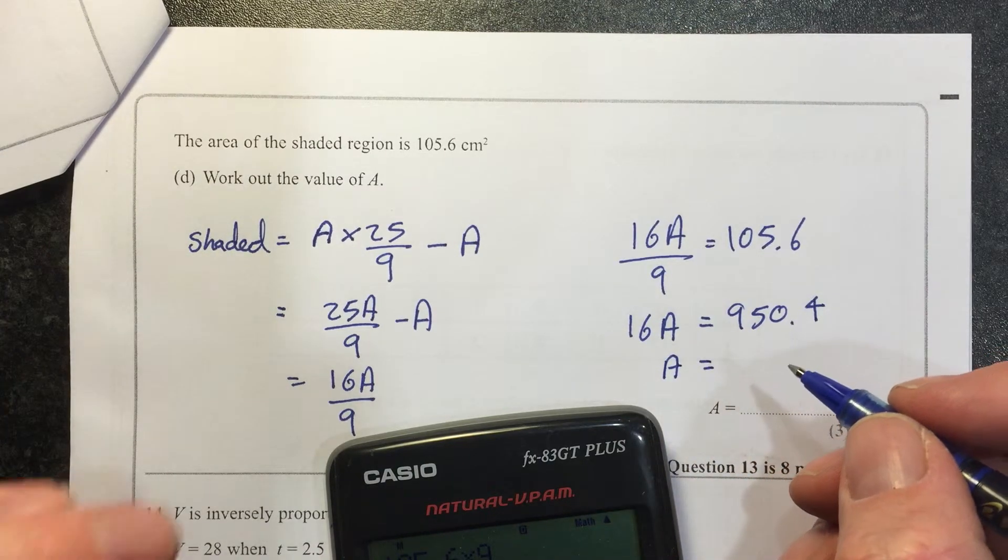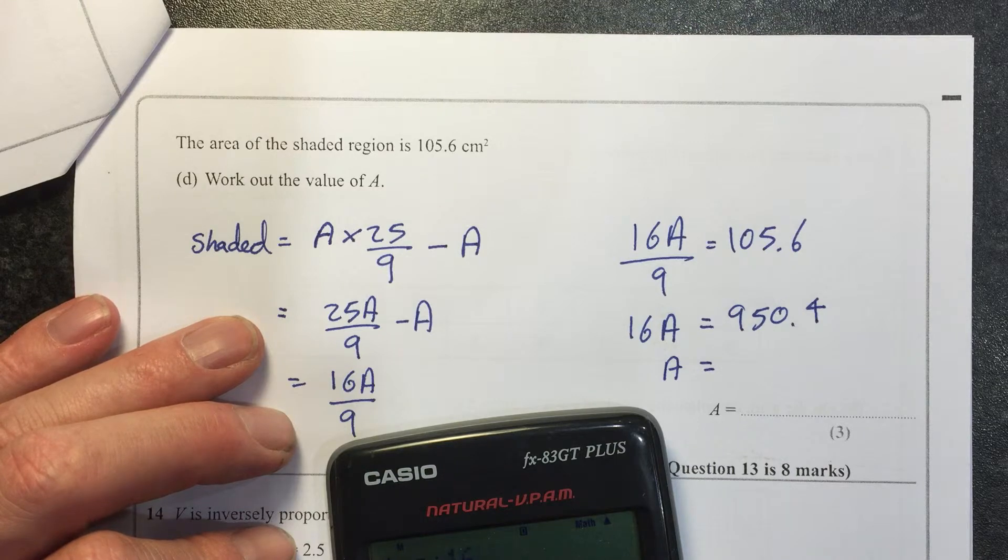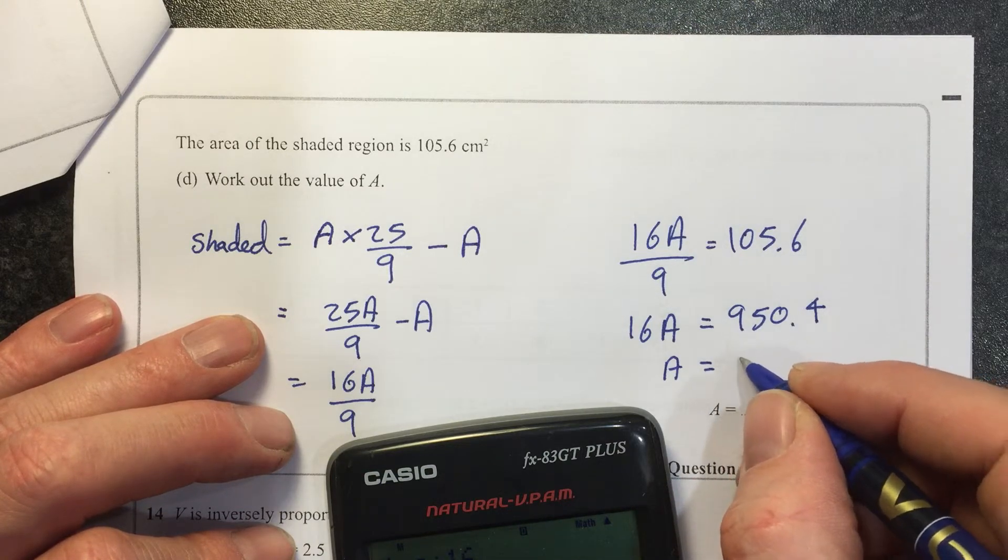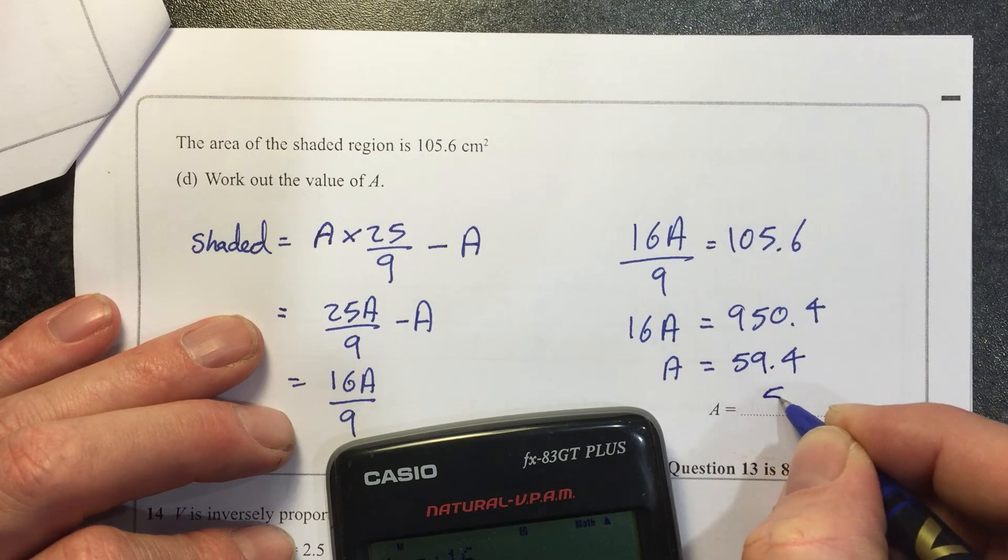So excuse me, A is 950.4 divided by 16, A is 59.4. There we go, let's write it.